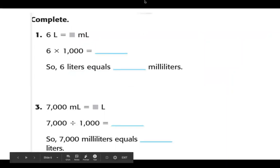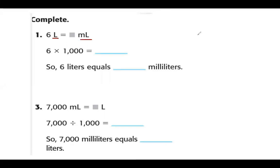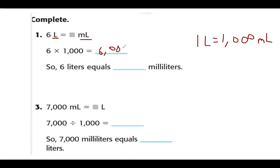Here are two practice problems. The key fact for this whole lesson is that one liter equals 1,000 milliliters. On the first problem we're going from liters to milliliters — starting with the bigger unit means we multiply. Six times 1,000 gives us 6,000, so six liters is equal to 6,000 milliliters.